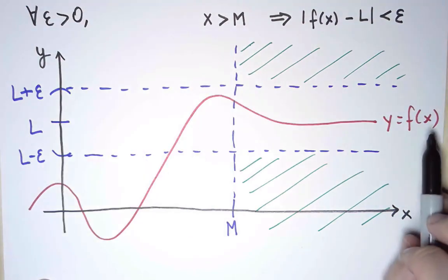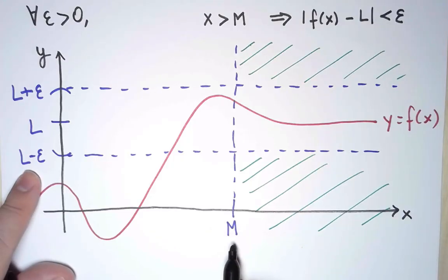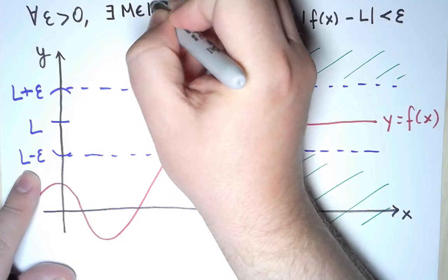So I'm going to add here at the top a for every ε greater than 0. And that means I want this to be true no matter which value of ε positive I take. But for each such value of ε, it is only necessary that I find one value of M that works. So I'm going to put that as there exists a real number M.